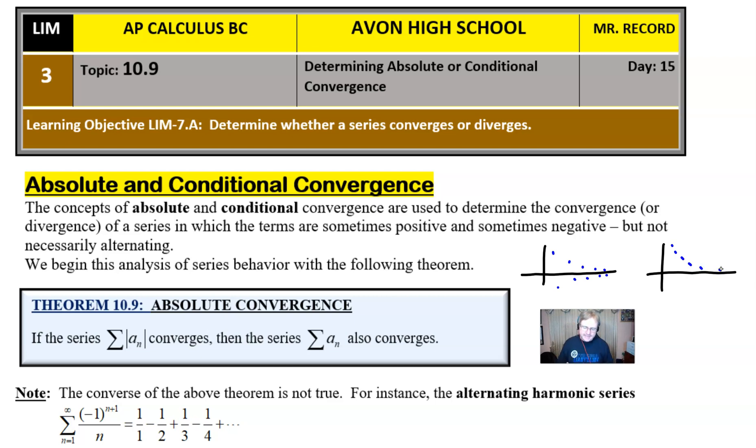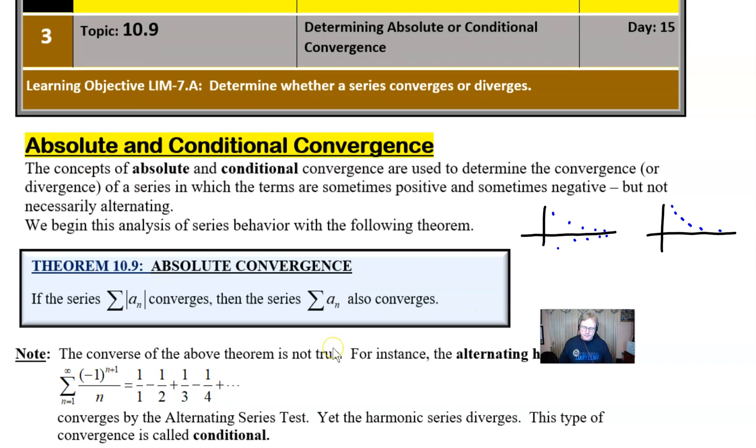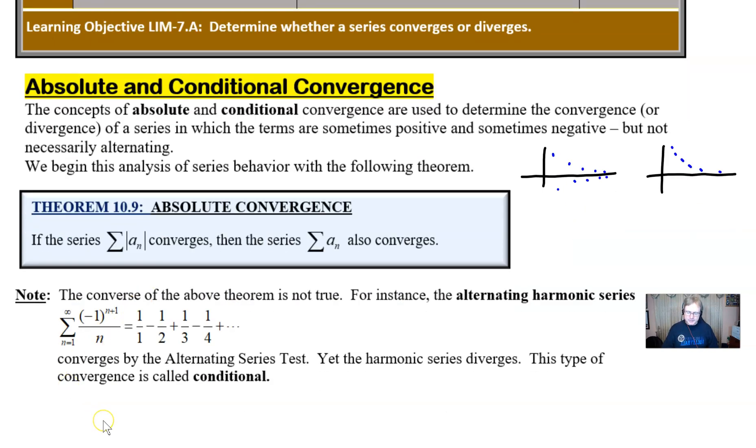So it's basically telling us that if this one here on the right is going to converge, then the one on the left is going to converge as well. Now, take note, the converse of that theorem is not true. In other words, if you say a series converges, then putting the absolute values around that expression will make the series converge as well.